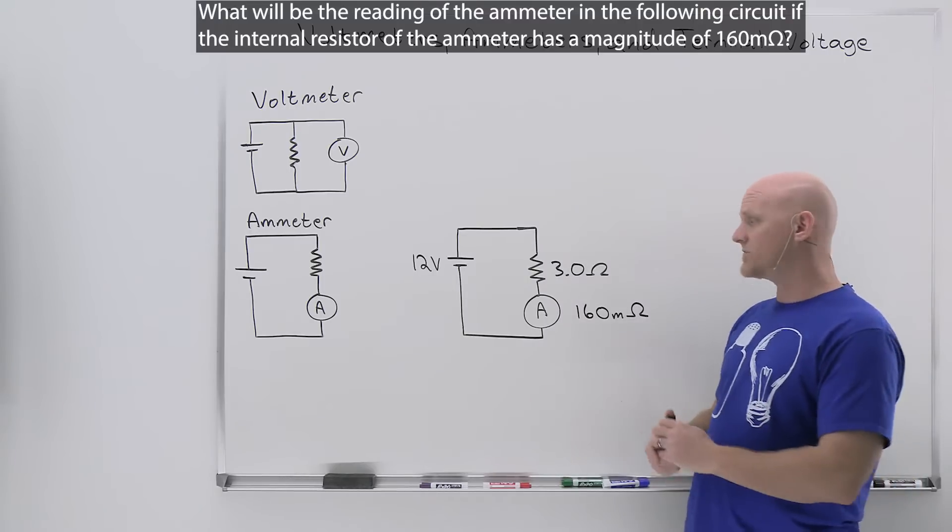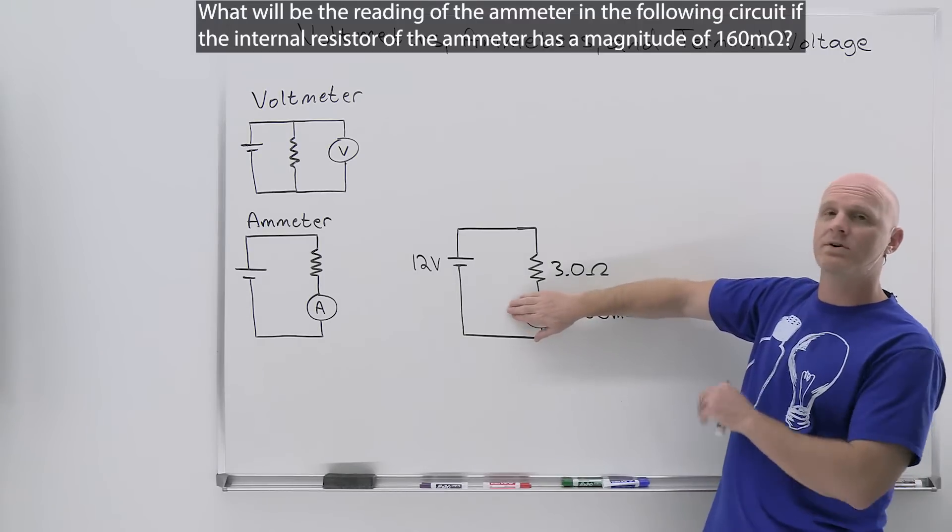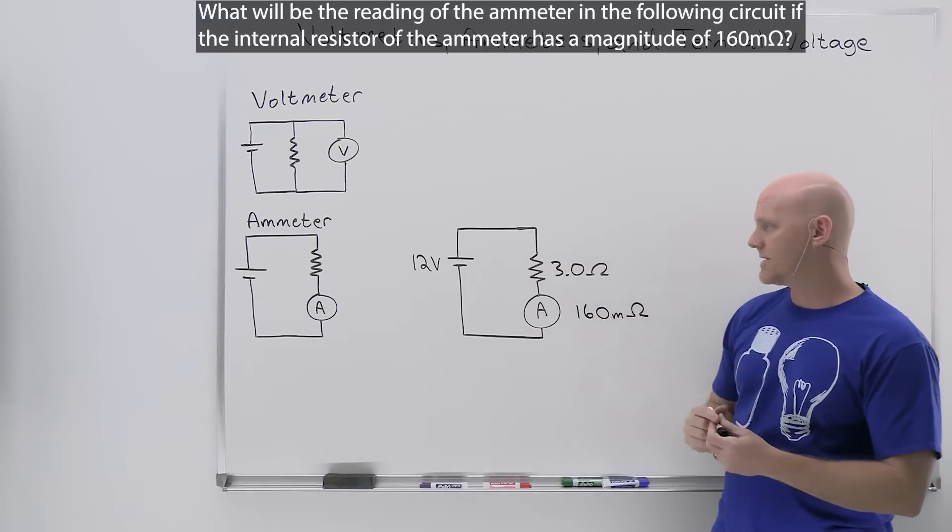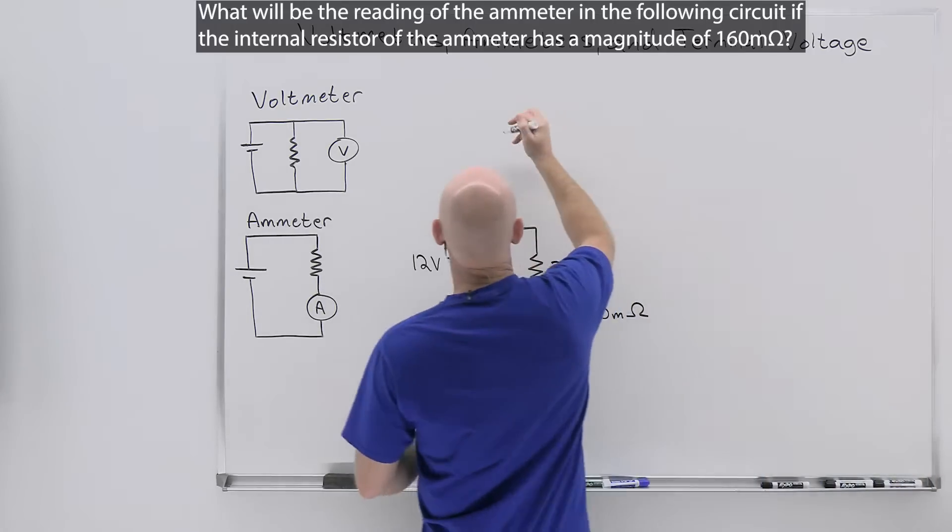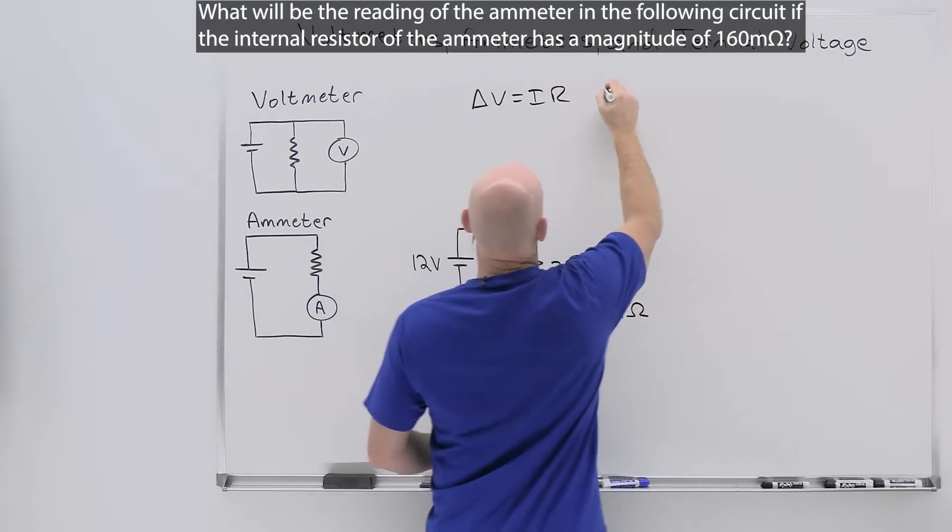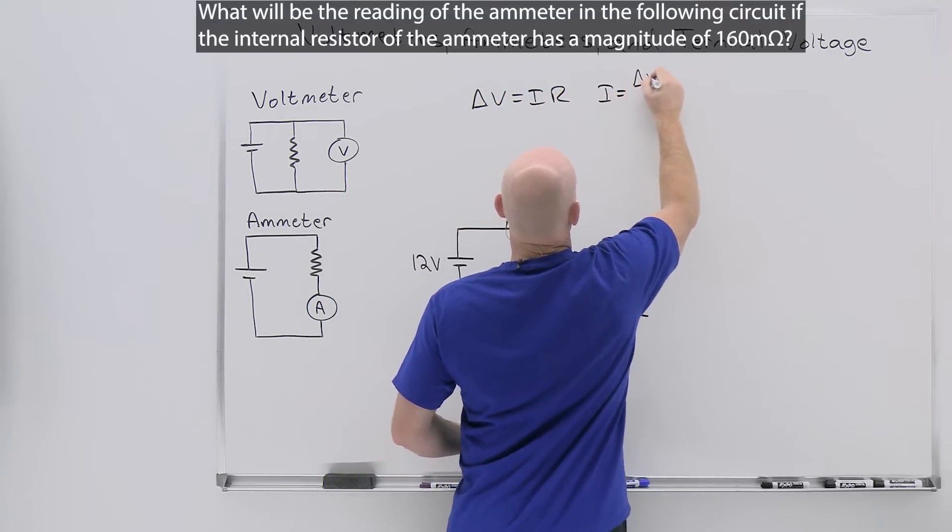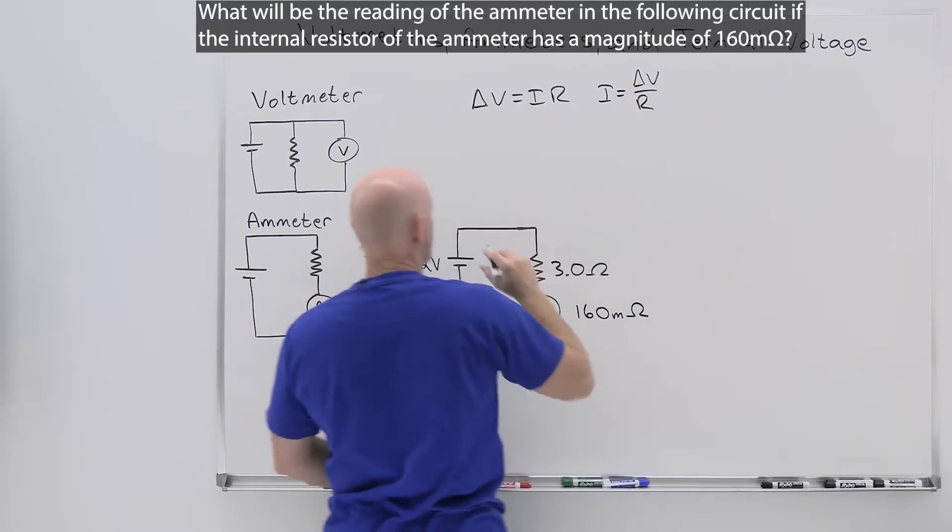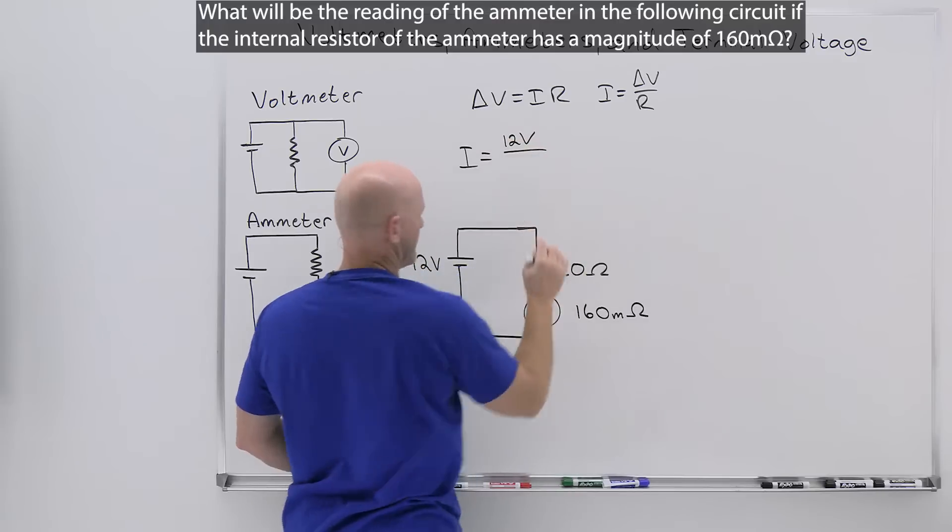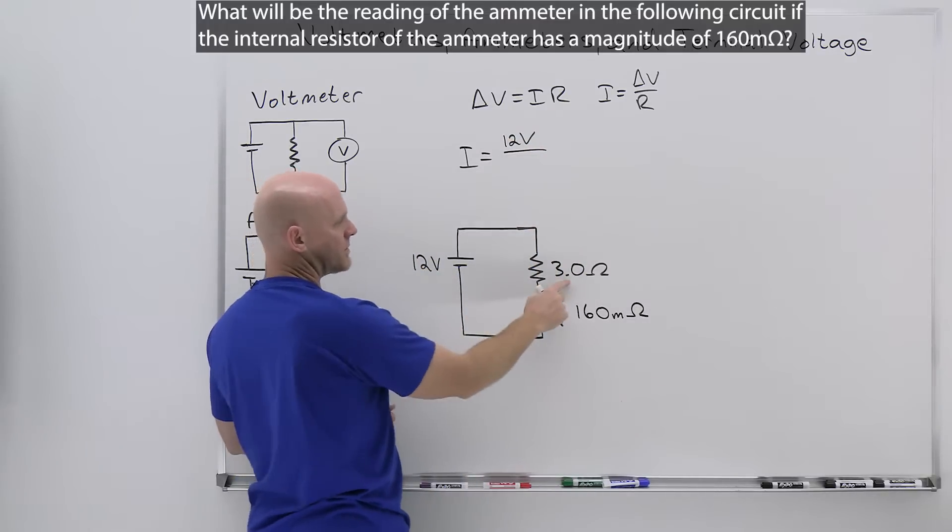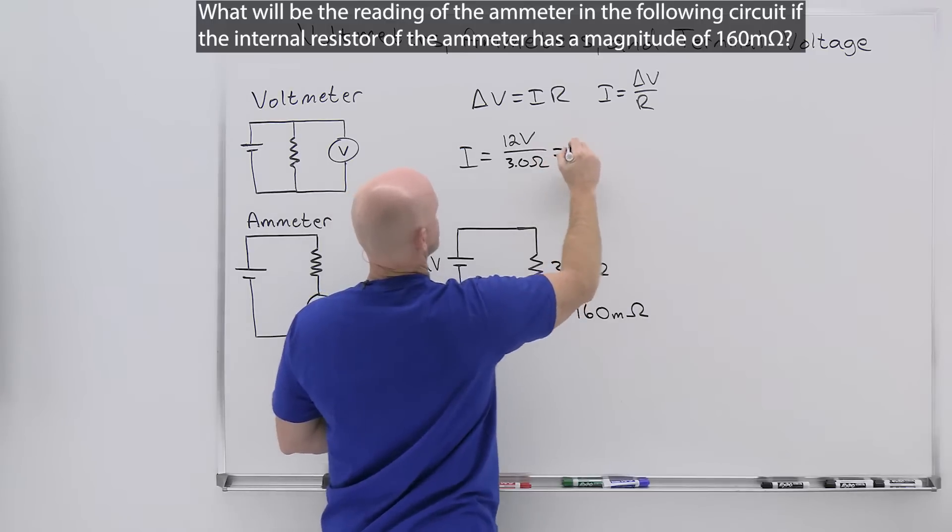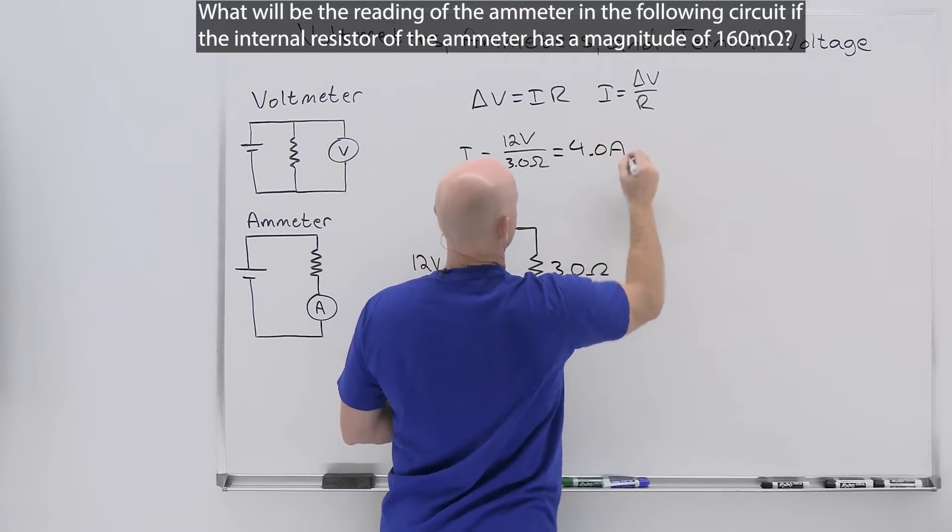Now we're going to do this calculation twice - once without the ammeter, pretending it's not even hooked up, and then again with the ammeter hooked up. So without the ammeter, we can just simply use Ohm's law: delta V equals IR. Rearrange that to get I equals delta V over R. From here we can see that delta V is 12 volts, and if the ammeter wasn't hooked up, we'd just have the 3 ohms of resistance, and we could see that it would be 4.0 amps.